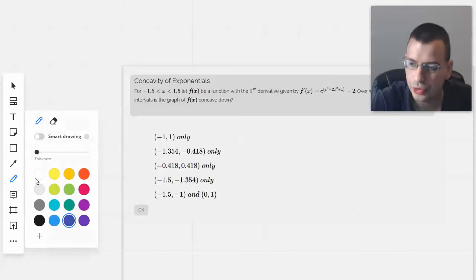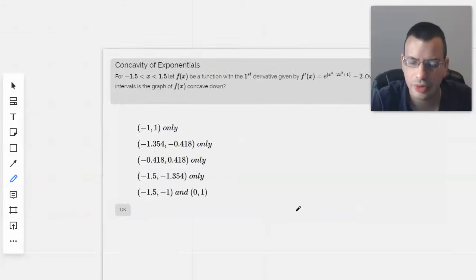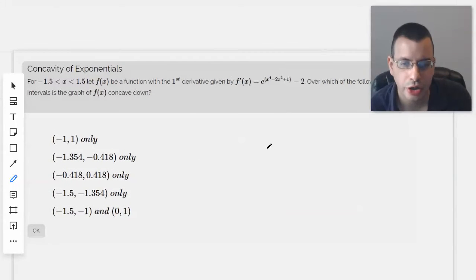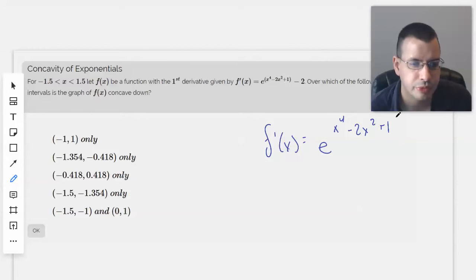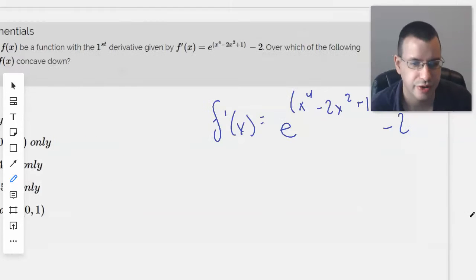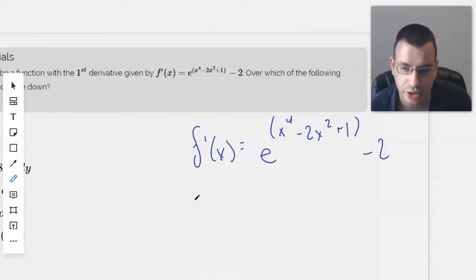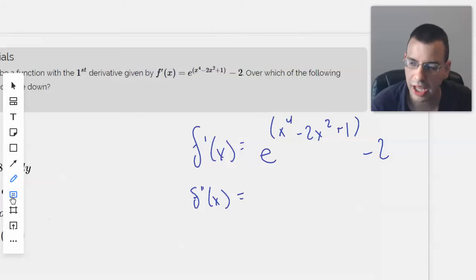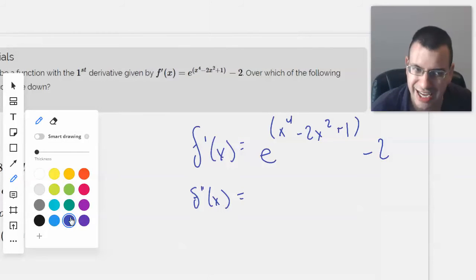So what we're going to do is find the derivative. We're given that f'(x) equals, and I know this looks super complicated but it's not too bad, we can do this. We take the derivative, so f''(x), and this is going to be the chain rule.